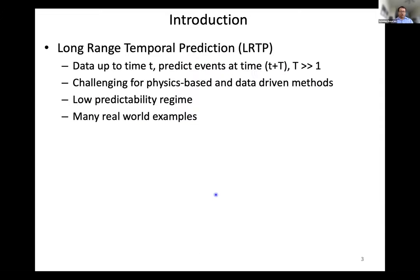So what is this long-range temporal prediction problem? The way it's different and unique is that you have data up to a certain time point T, and you're trying to predict events at a certain time point T plus capital T, where capital T is much, much larger than one. So you're trying to predict the weather one month down the line. These problems are fundamentally in the low predictability regime — you're not expecting R-squared at 80%. You're expecting R-squared at 5% or 10%. That's the operating regime we're talking about.